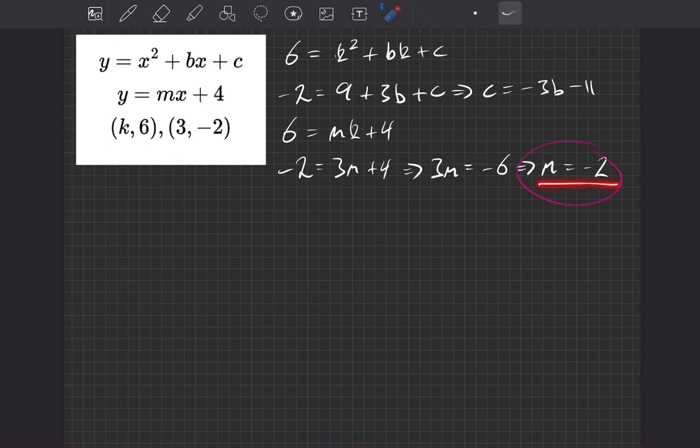So we'll take this equation and we'll substitute in m equals minus 2, instead of the m in here. So what does that give us? Well, we get that 6 is equal to minus 2 times k plus 4. So if we rearrange for k, what do we get?